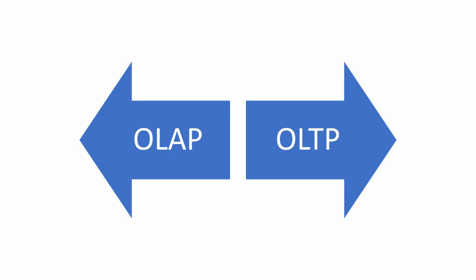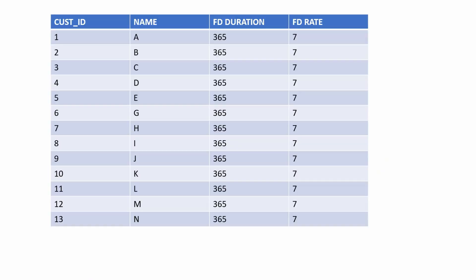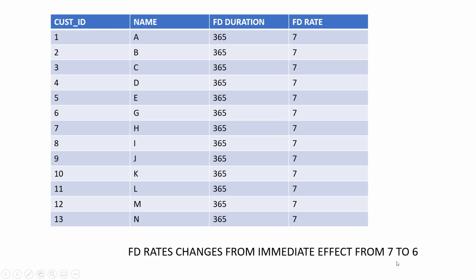Let's take another quick hypothetical example. We have a million customers in a bank who have done a fixed deposit for a year at the rate of 7%. The bank decides to change the rate to 6% with immediate effect. With this table structure, we will have to update a million rows, which can take time and can lead to update anomalies as well. So for such a system, it is vital that we normalize our data.